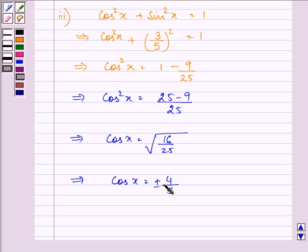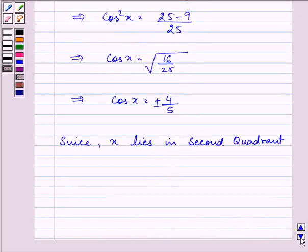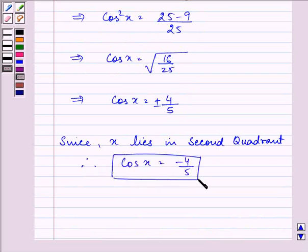But as we know that x lies in the second quadrant, so that means its value will be negative since x lies in second quadrant. Therefore cos x is equal to minus 4 by 5.